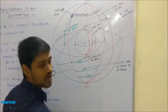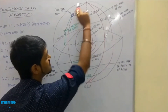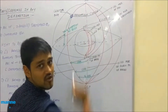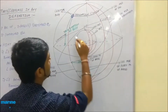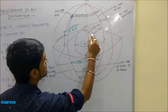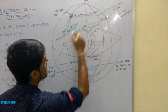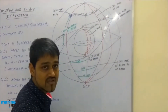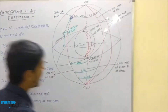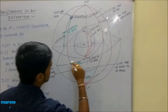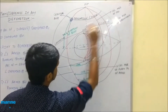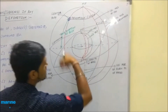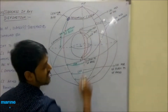The meridians on earth expand to become celestial meridians on the celestial sphere. The declination circles are basically the expansion of the latitude circles. Now, this tilted great circle visible in the picture is known as the ecliptic.